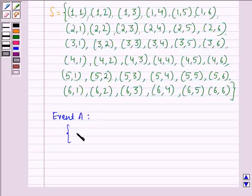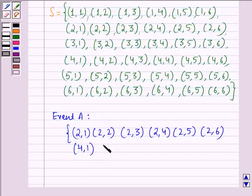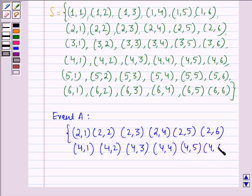So, the sample space for event A is (2,1), (2,2), (2,3), (2,4), (2,5), (2,6), (4,1), (4,2), (4,3), (4,4), (4,5), (4,6).